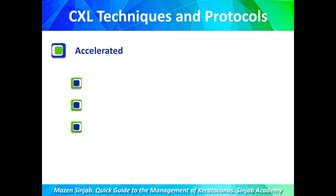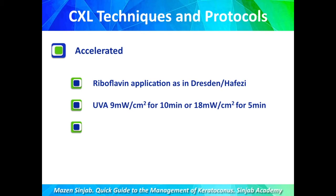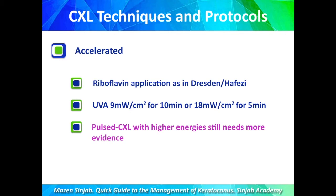In accelerated protocols, riboflavin is applied as in Dresden or Hafizi after epithelium removal. The UVA can be delivered in two evidence-based ways: either 9 mW/cm² for 10 minutes, or 18 mW/cm² for 5 minutes. These are the only evidence-based accelerated options. Pulsed crosslinking with higher energies still requires more evidence.